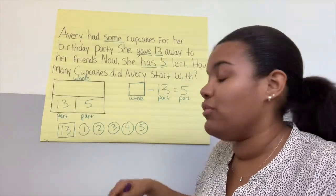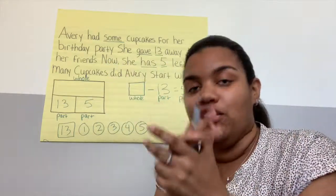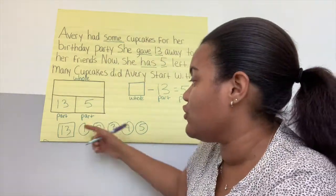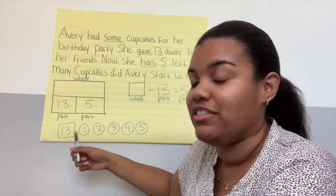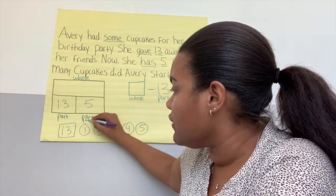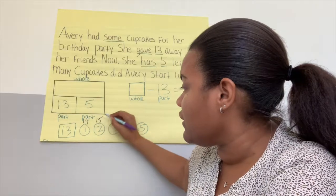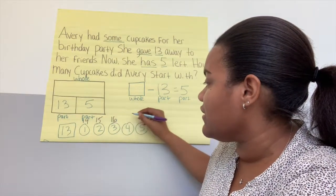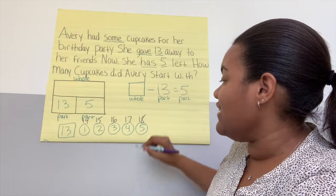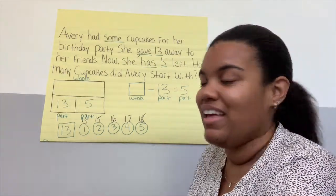Because we know that part plus part equals the whole. So after 13 comes what? Good — 14. Keep going — 15. Count with me: 16, 17, 18. Avery had 18 cupcakes.